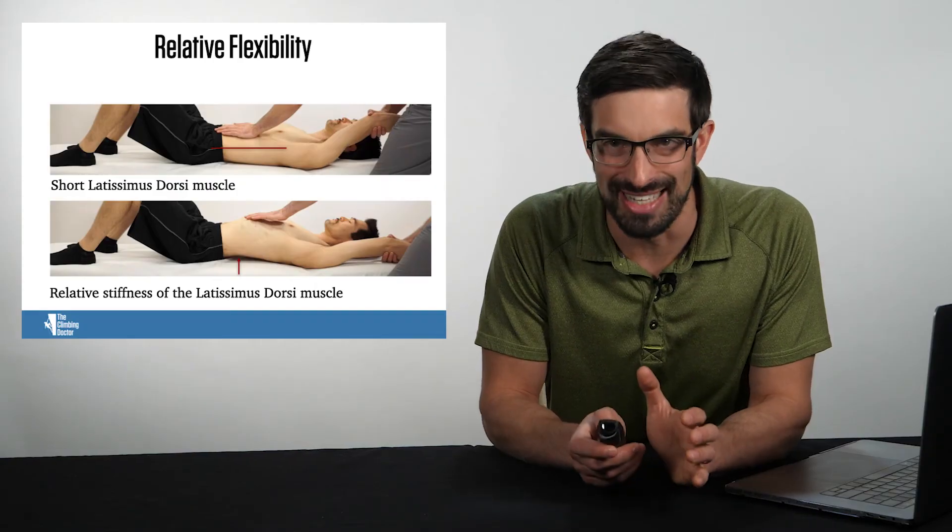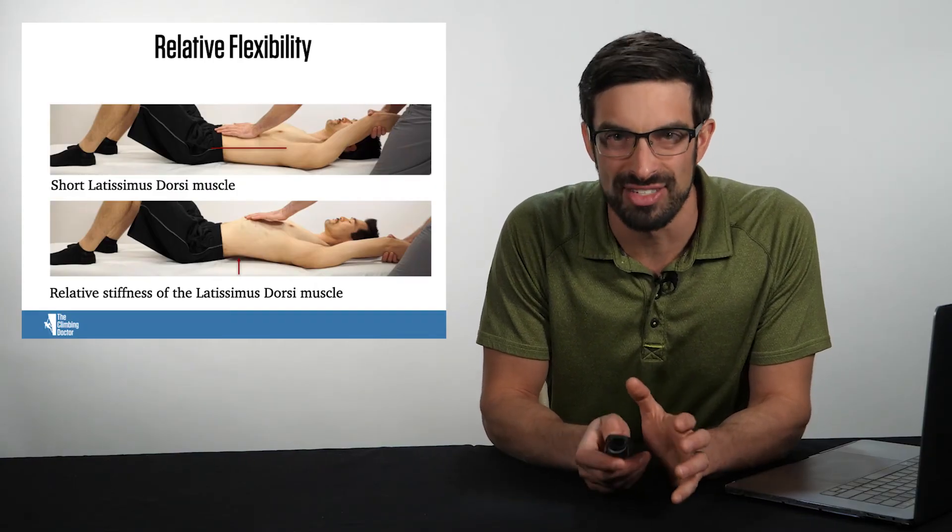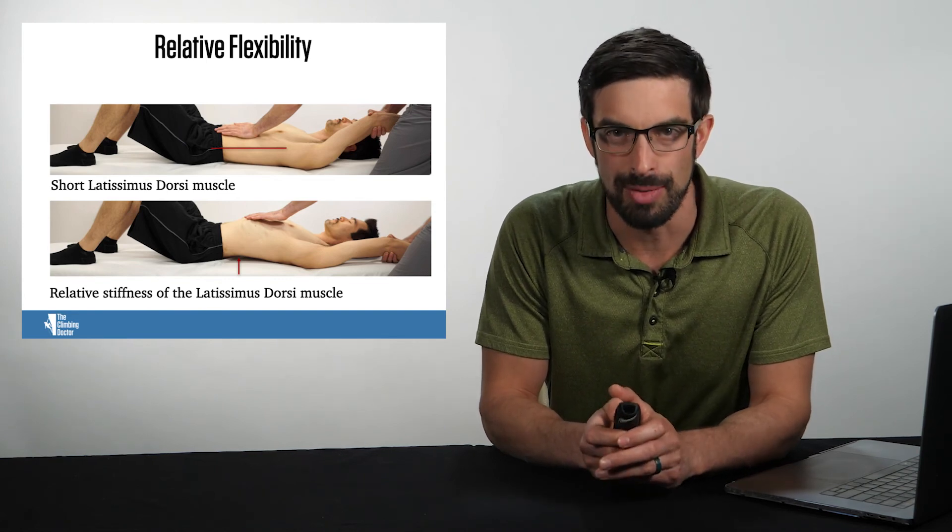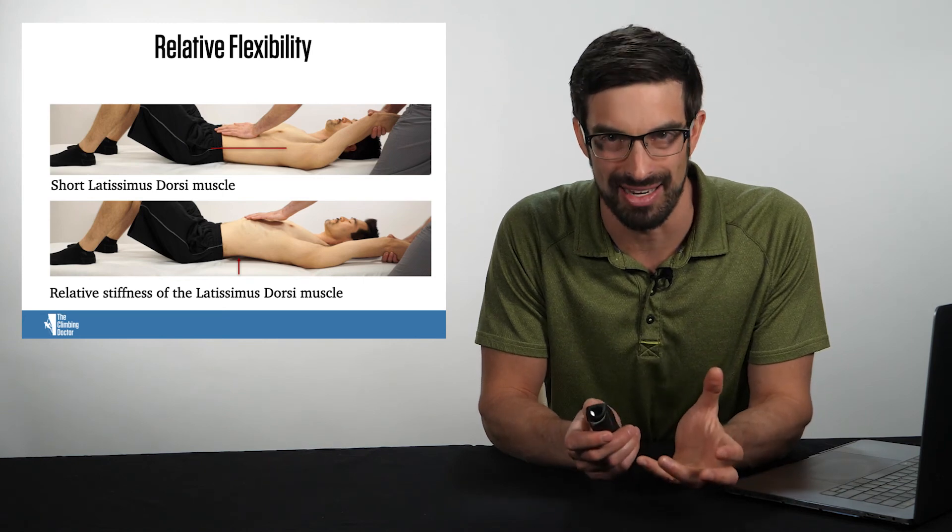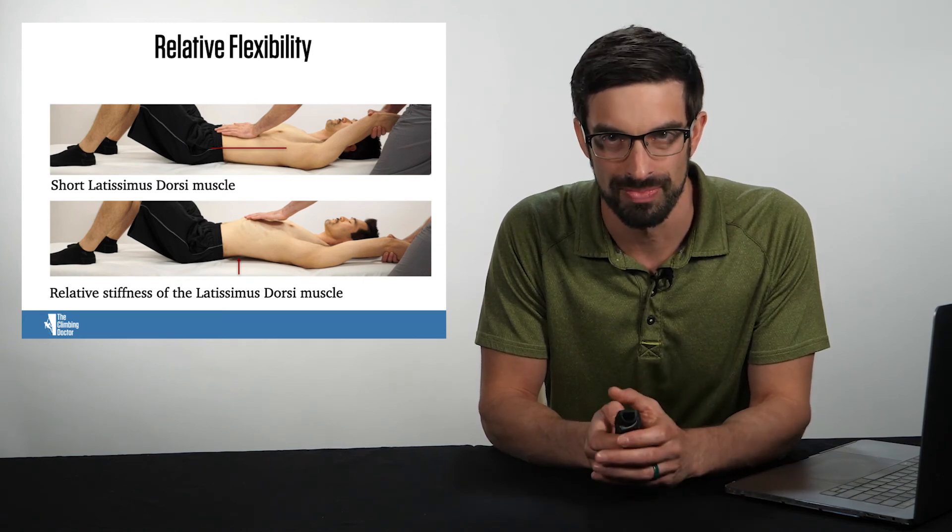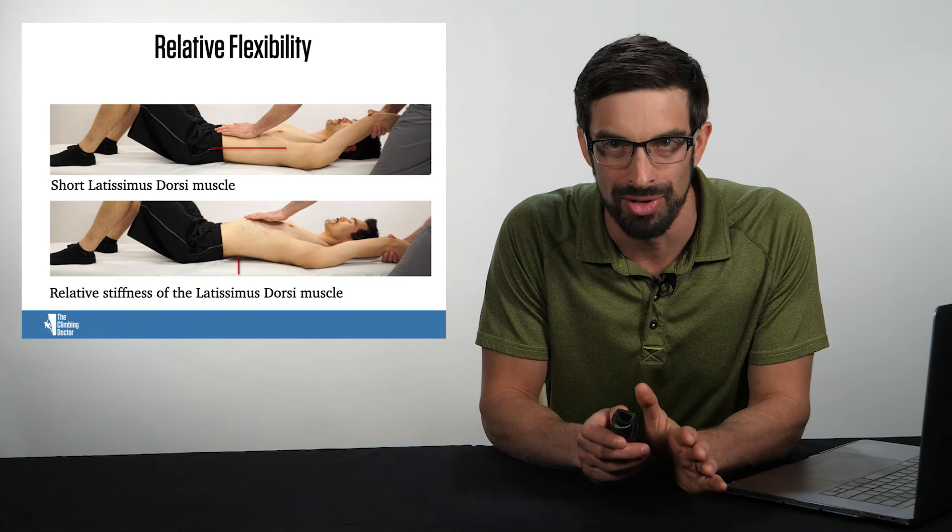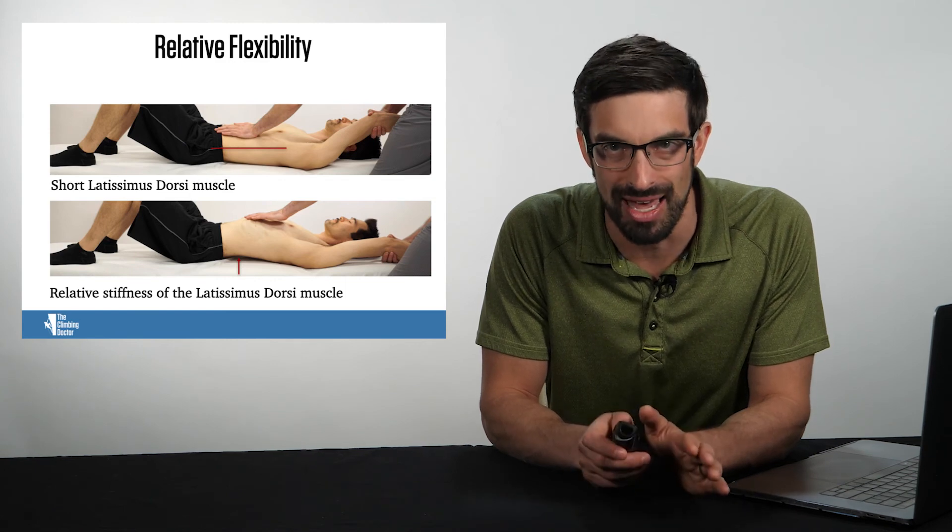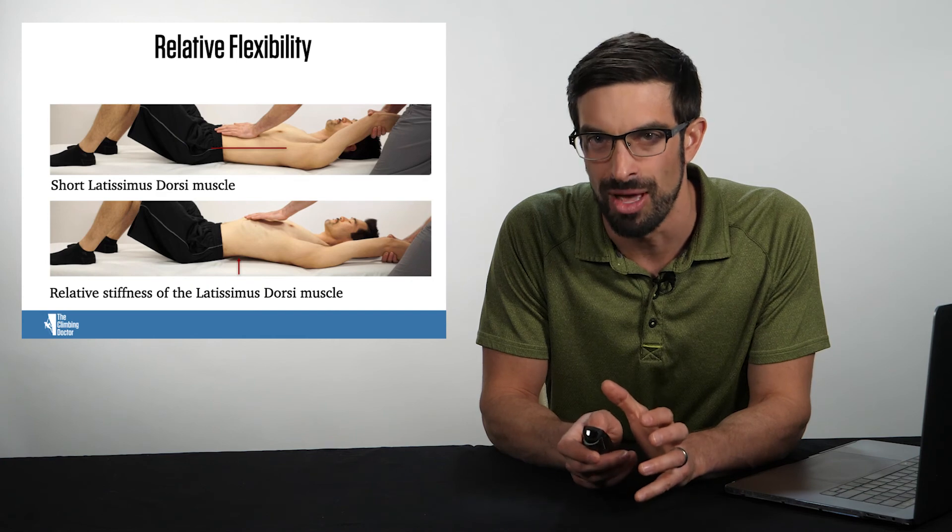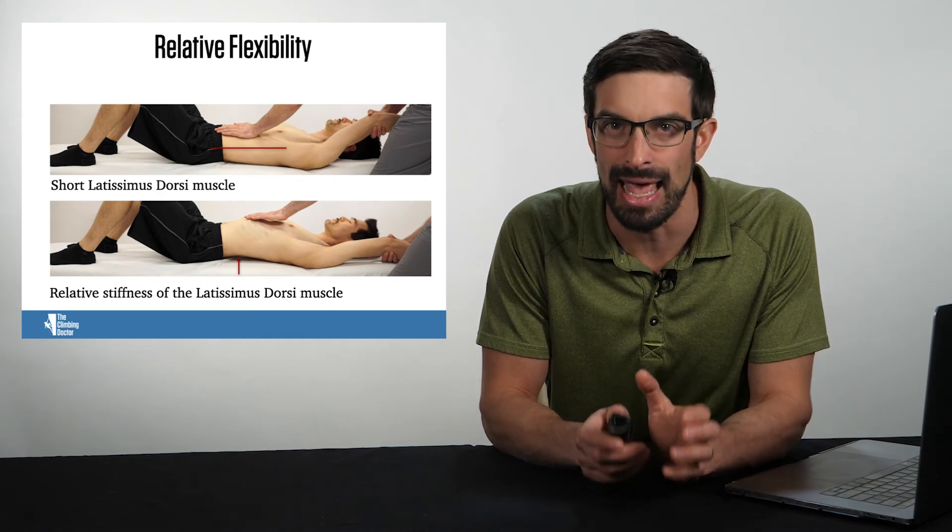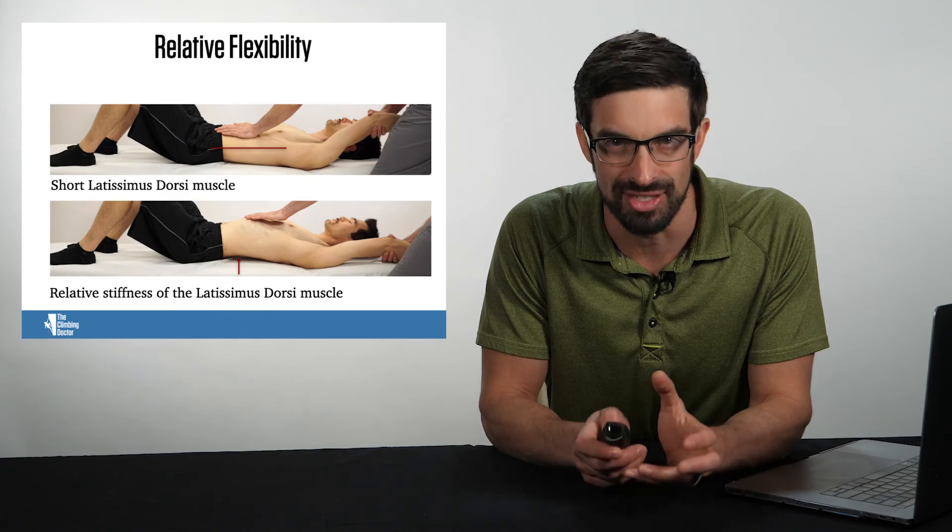In that first example, we saw the relative stiffness of the latissimus dorsi muscle. As I brought the climber into humeral flexion, we saw that his rib cage expanded and his lumbar spine arched. In the second example, when I stabilized the rib cage, the climber was no longer able to achieve maximal shoulder flexion, indicating a muscle with a mobility deficit.